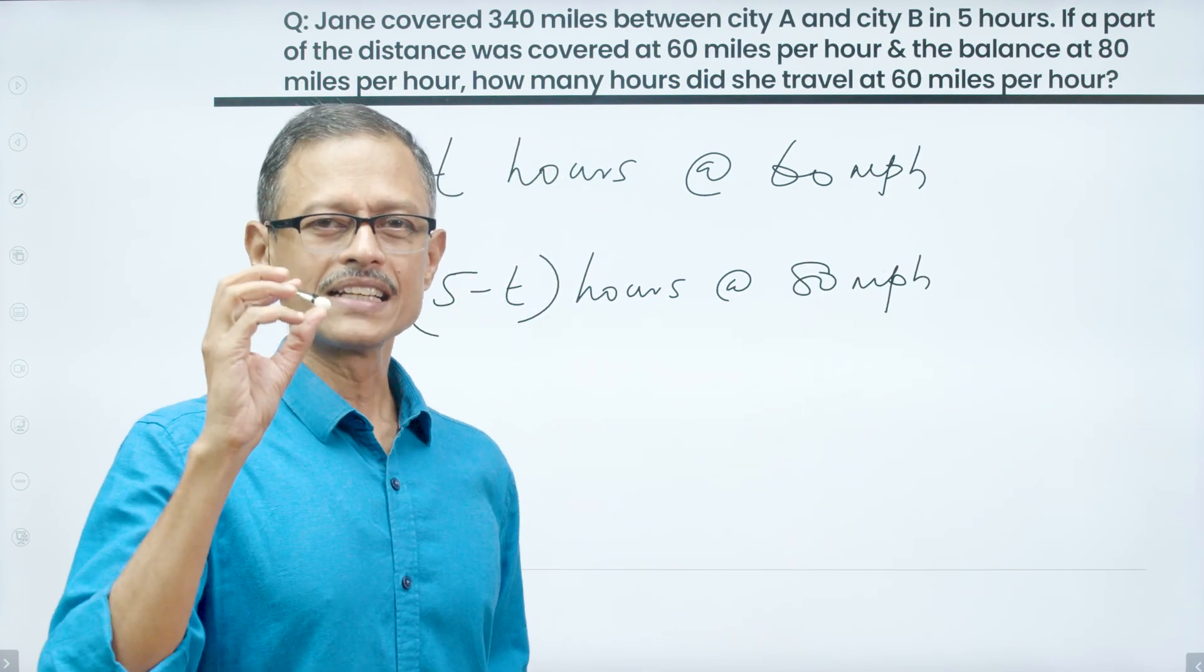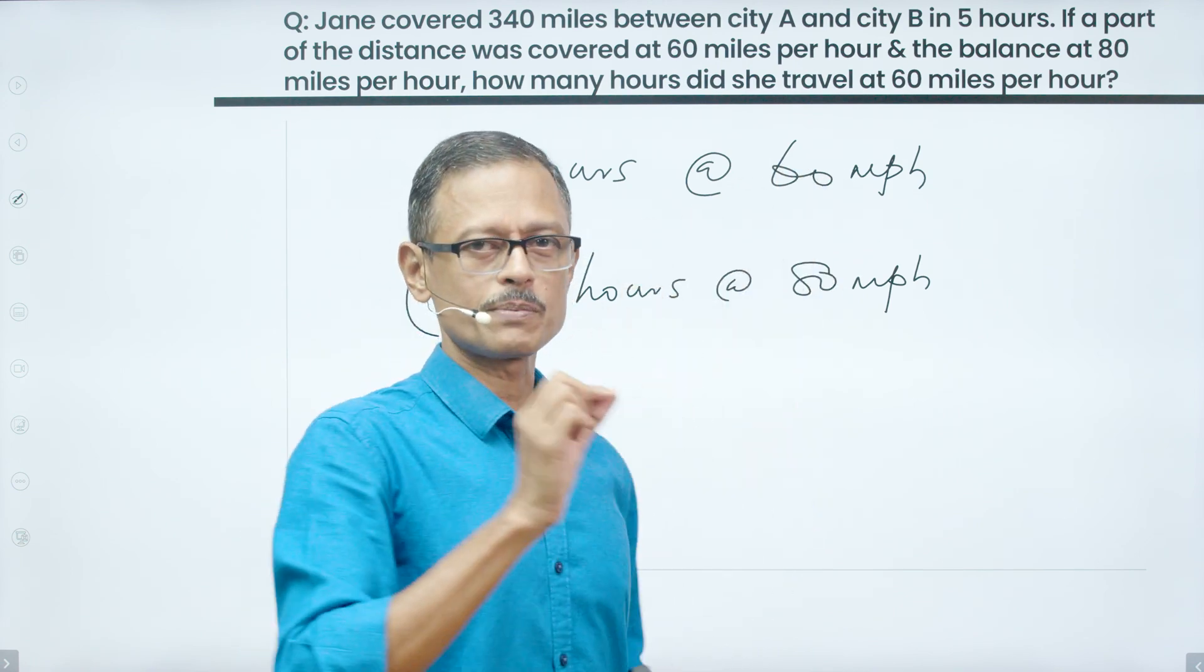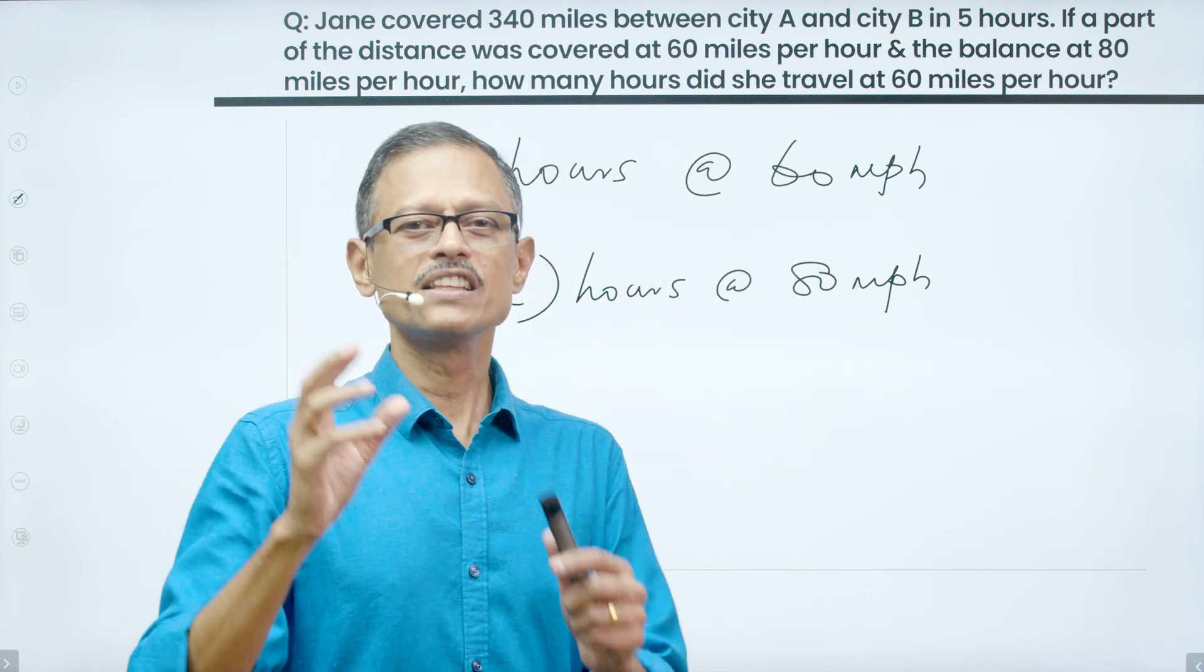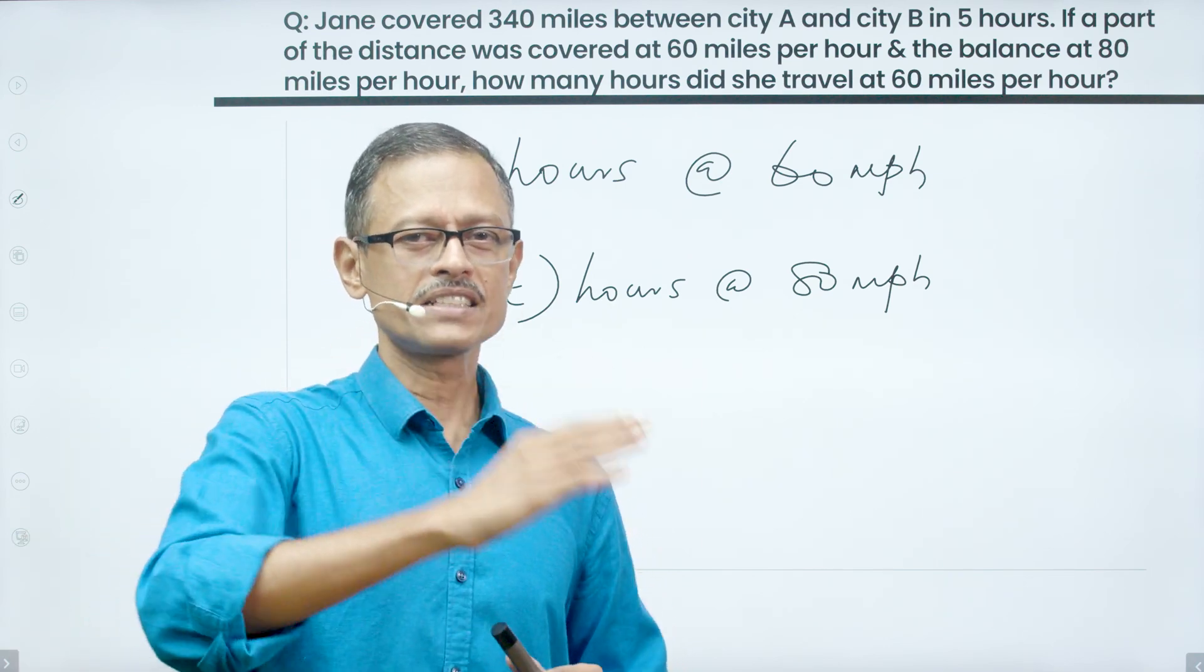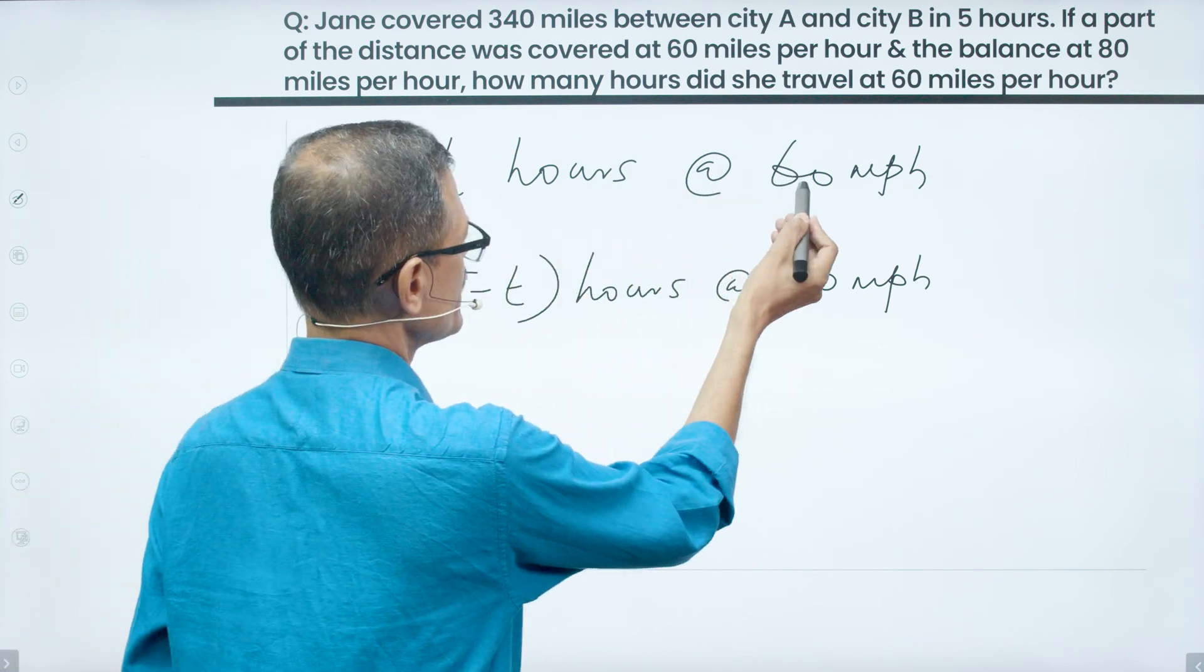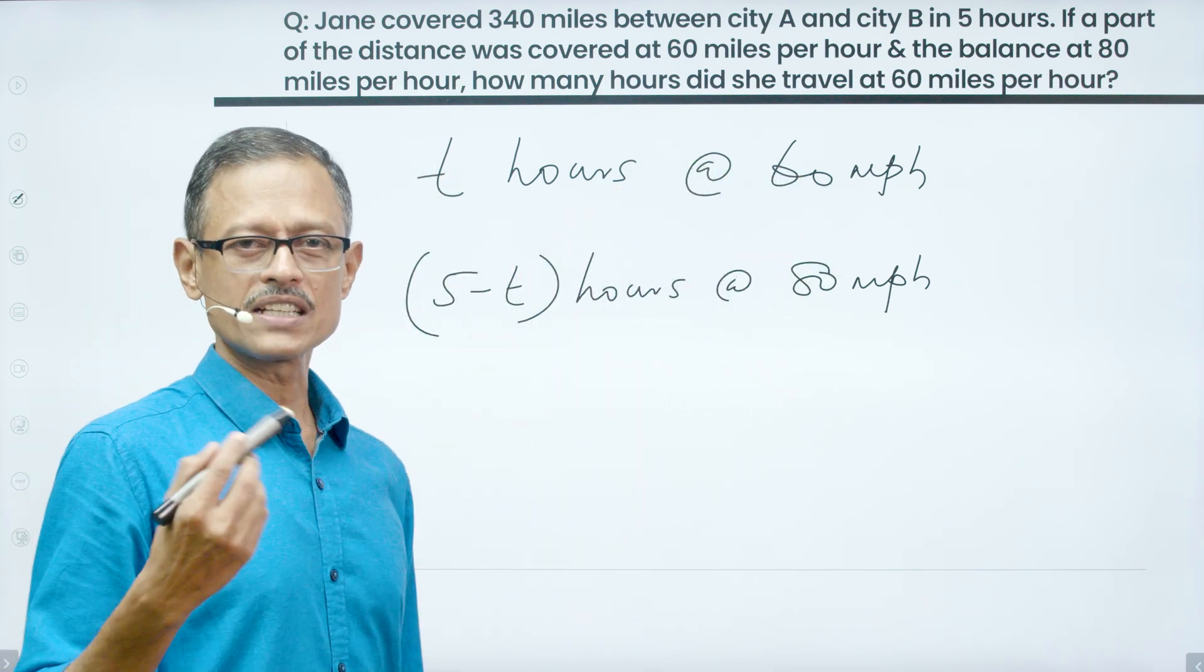Total distance traveled is the distance traveled at 60 miles per hour plus the distance traveled at 80 miles per hour. And this should be equal to 340. That's the equation we are going to frame and solve for T. This is the time taken. This is the speed. The product of speed and time will give us distance.